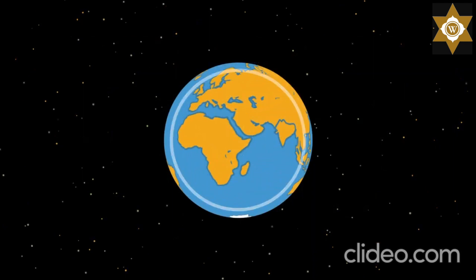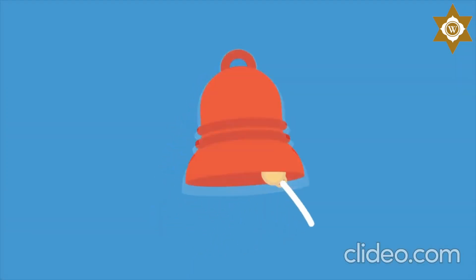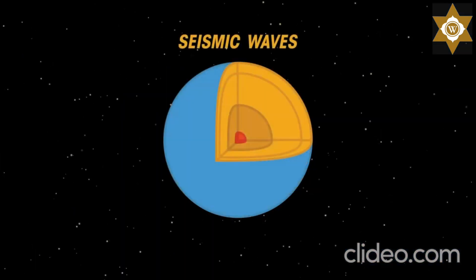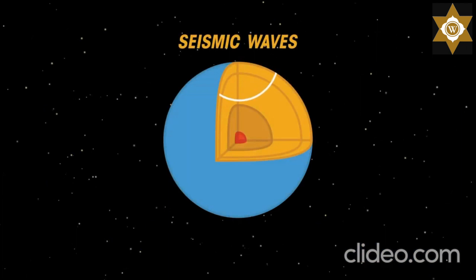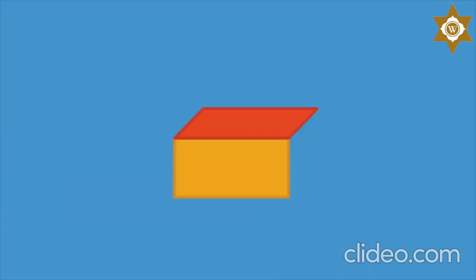Earthquakes create shockwaves, like a bell ringing, known as seismic waves, and these travel both deep into the earth and around its surface. Two types of seismic waves are made and each is quite different.